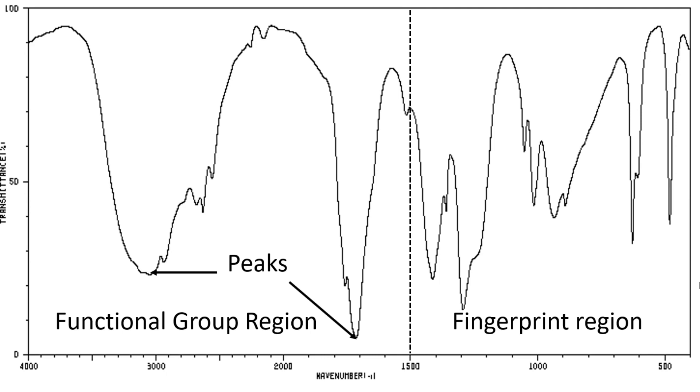The peaks in the functional group region help you work out what functional groups are present in your substance. There are also peaks in the fingerprint region that are indicative of a functional group, but you need to be very careful in analyzing these. We can see that we've got various peaks on this diagram.